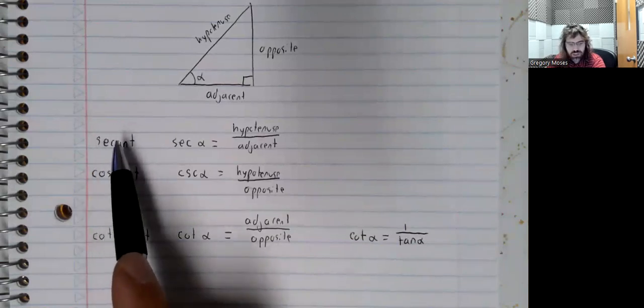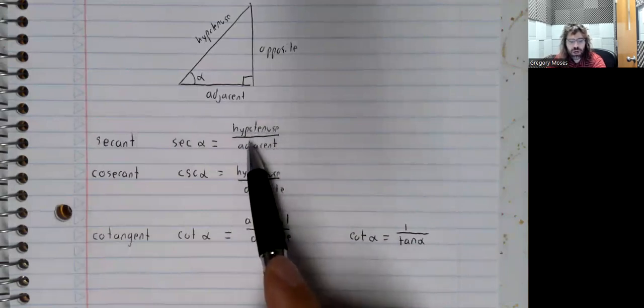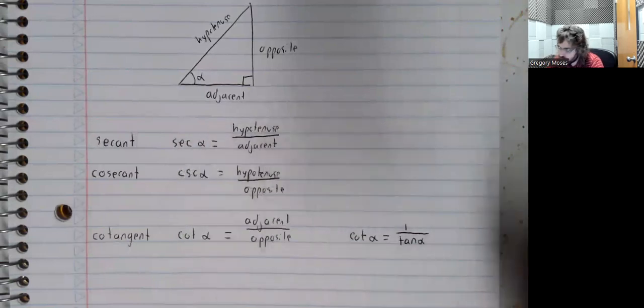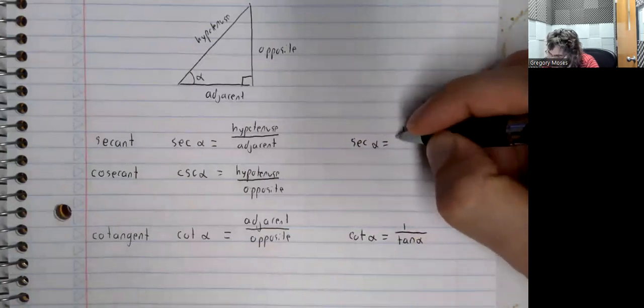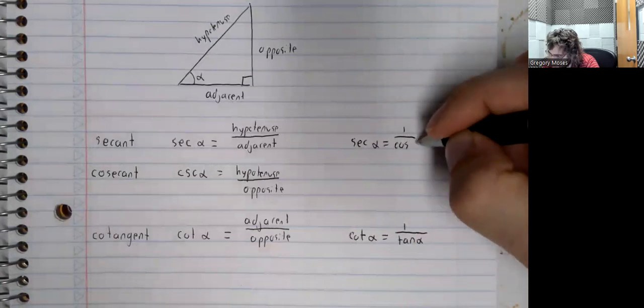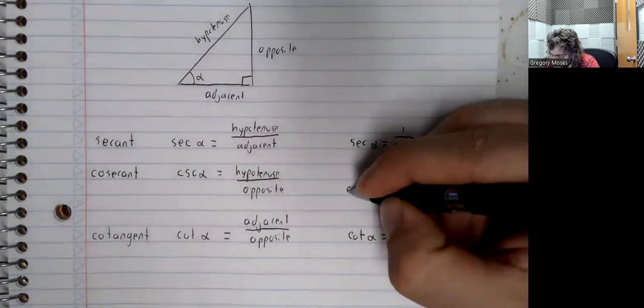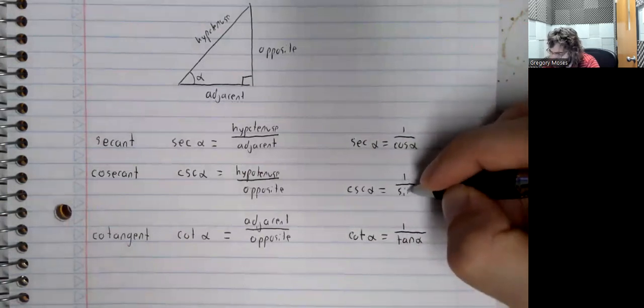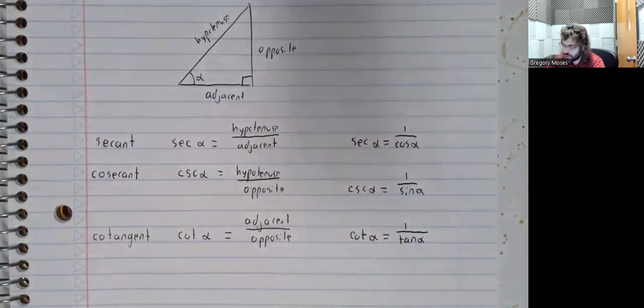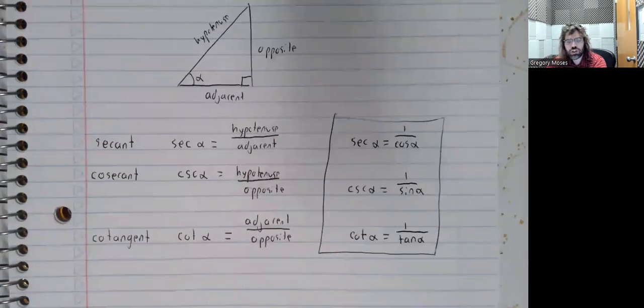And the secant—let's see, the cosine is the adjacent over the hypotenuse. So the secant is the reciprocal of that. The secant of alpha is one over the cosine of alpha. And the cosecant of alpha is one over the sine of alpha. And this is the traditional way that these three functions are committed to memory.